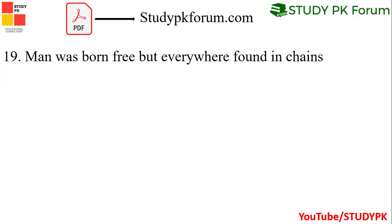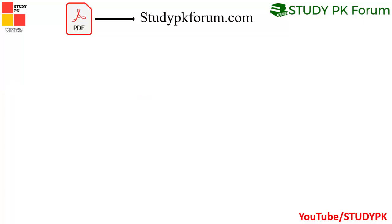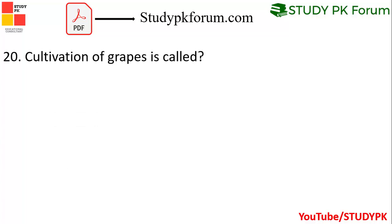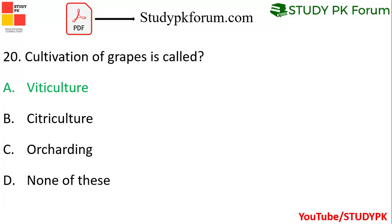Question 19: 'Man was born free but everywhere found in chains' — this famous quote belongs to Rousseau. The right answer was none of these option, but Rousseau is correct. Question 20: Cultivation of grapes is called Viticulture.